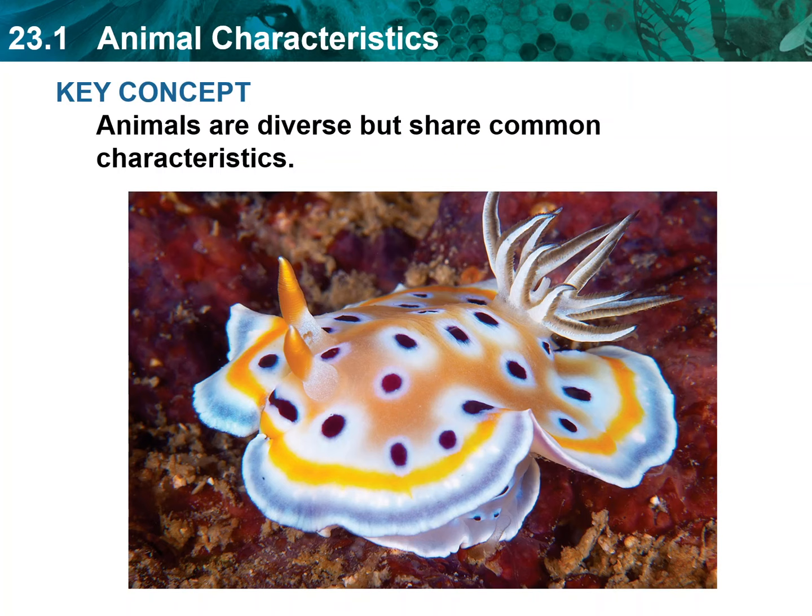We are animals. So are jellyfish, squid, cockroaches, tapeworms, sea stars, and the family dog. Animals live in nearly every environment on Earth, from high in the atmosphere to the deepest sea trench. While they come in a huge variety of shapes and sizes, they all share a common ancestry and a set of common physical and genetic characteristics.